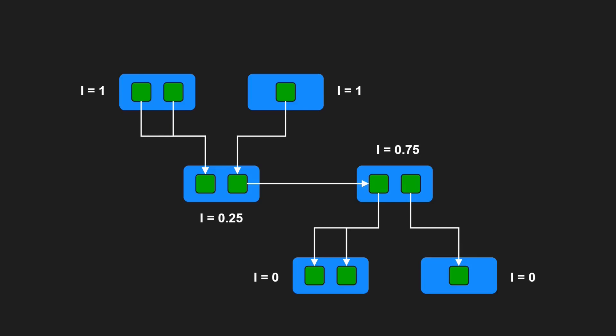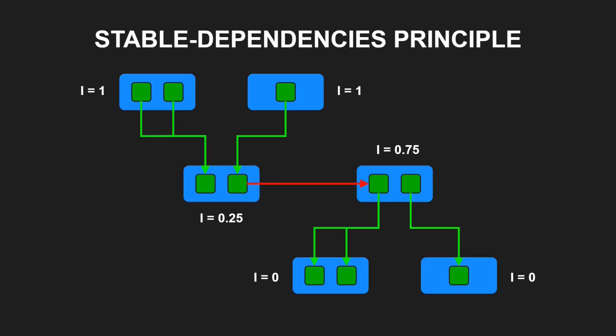In order to achieve designs that are easy to change, we want components we expect to be volatile to not be dependent on by a component that is difficult to change. Otherwise the volatile component will also be difficult to change. Therefore the stable dependencies principle demands that components should depend in the direction of stability.